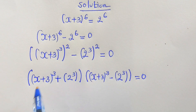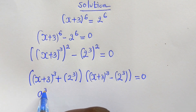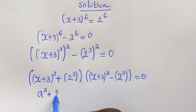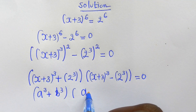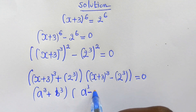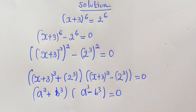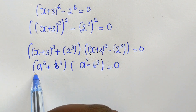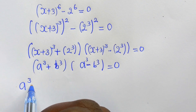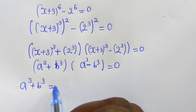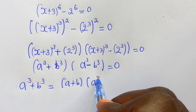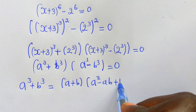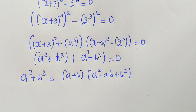We now have the form (a^3 + b^3)(a^3 - b^3) = 0. Recall that a^3 + b^3 = (a + b)(a^2 - ab + b^2). We will apply this starting with the sum of cubes factor.